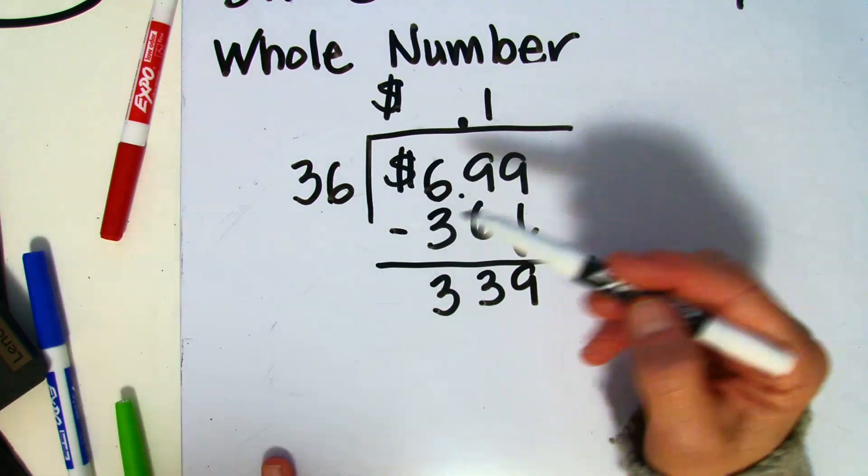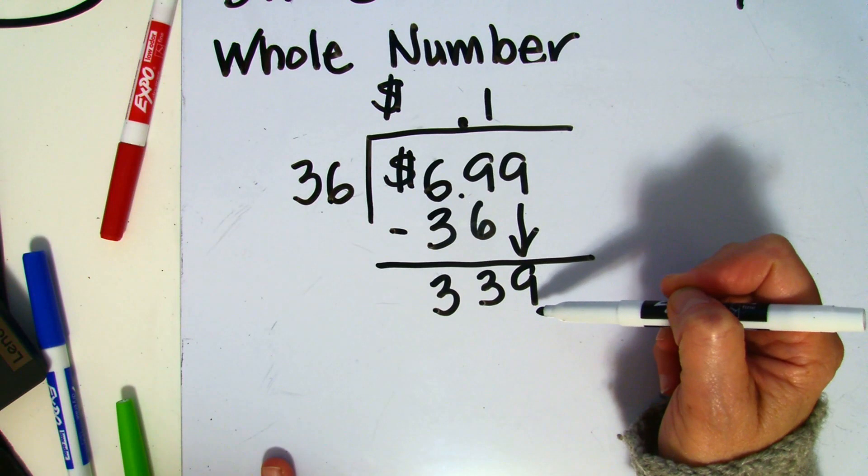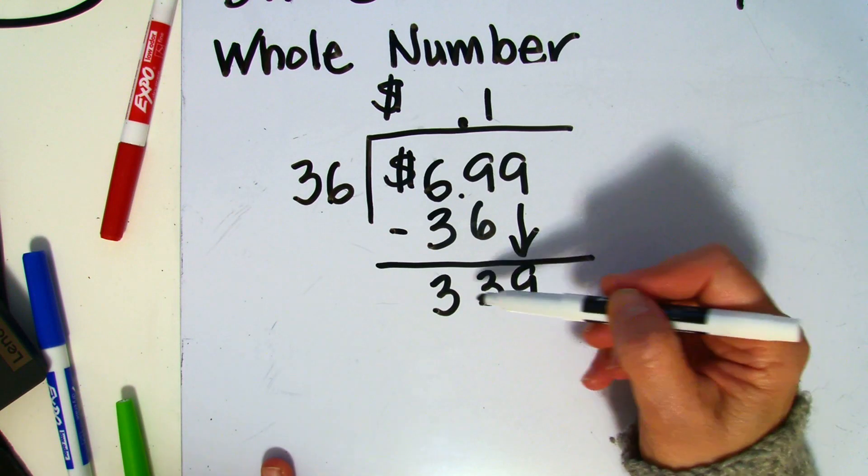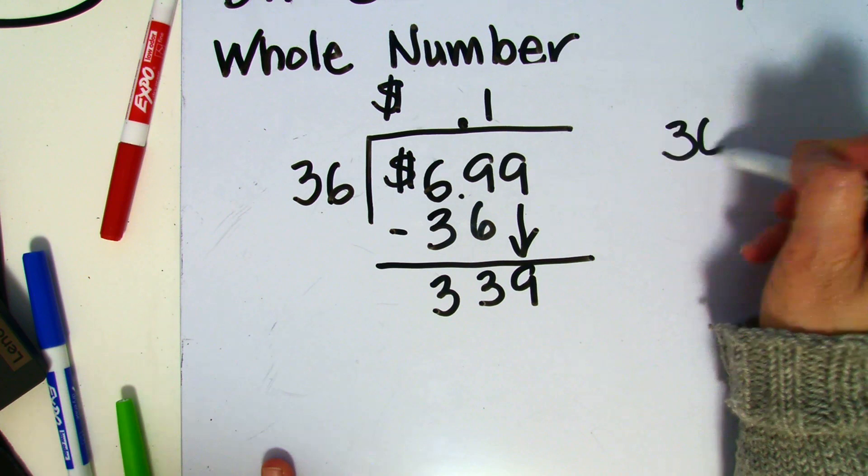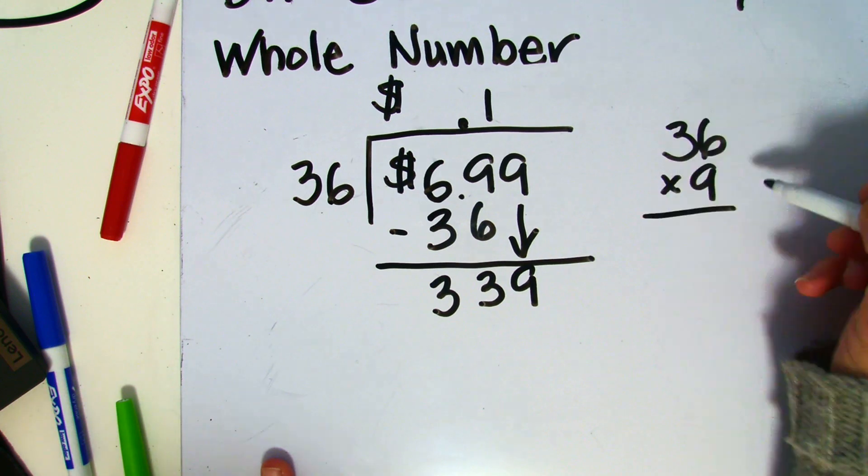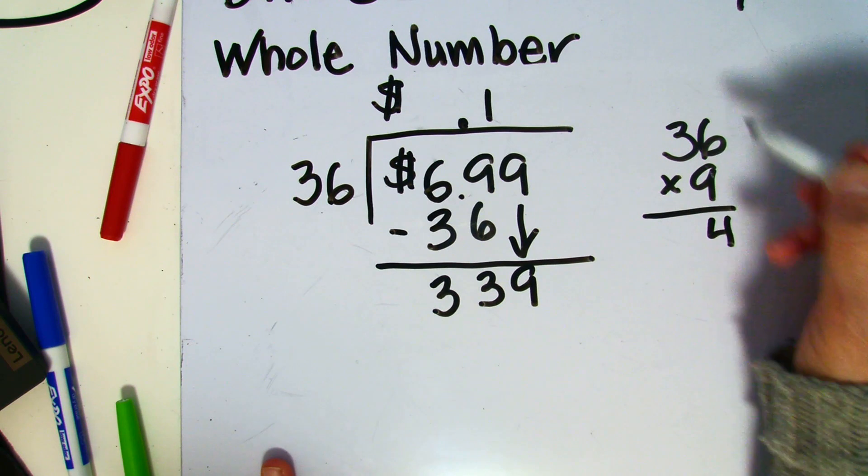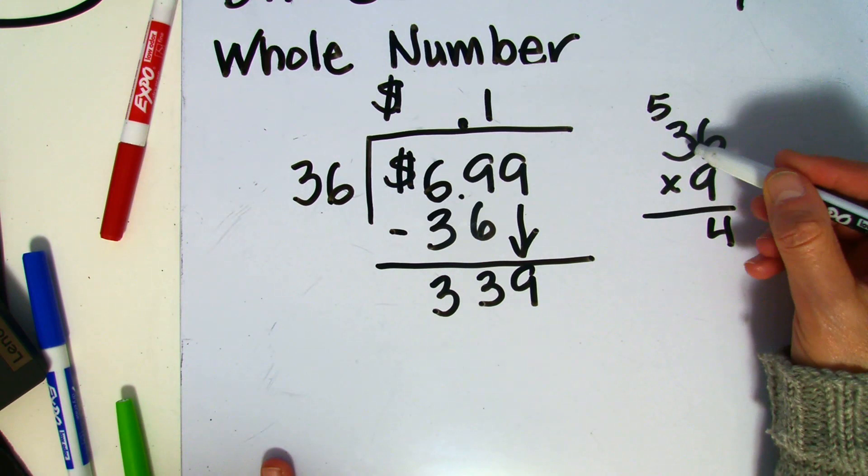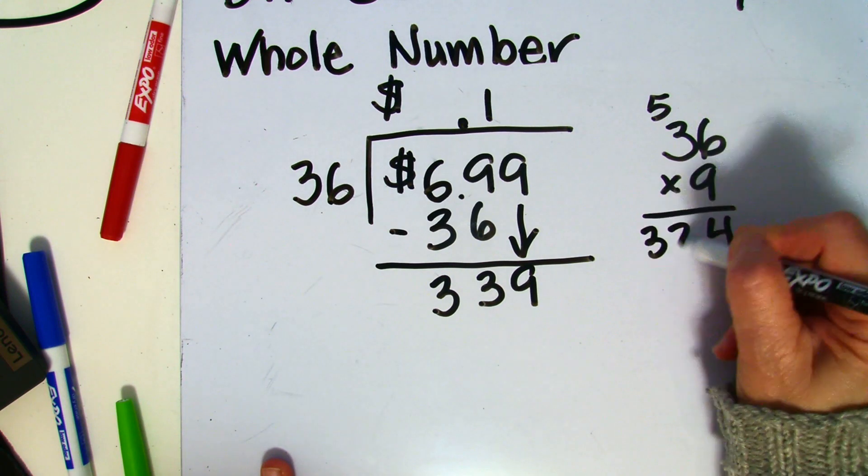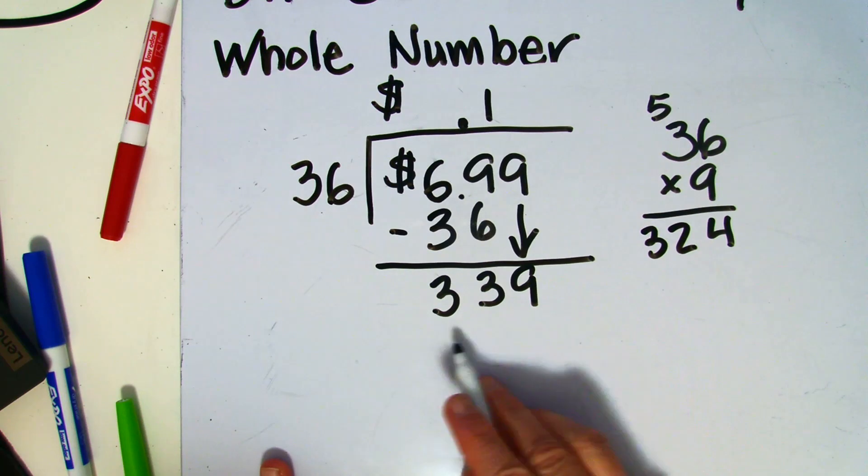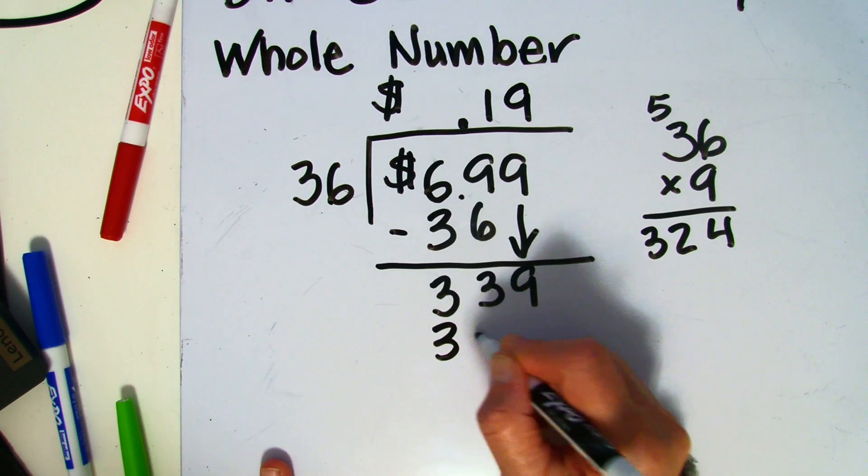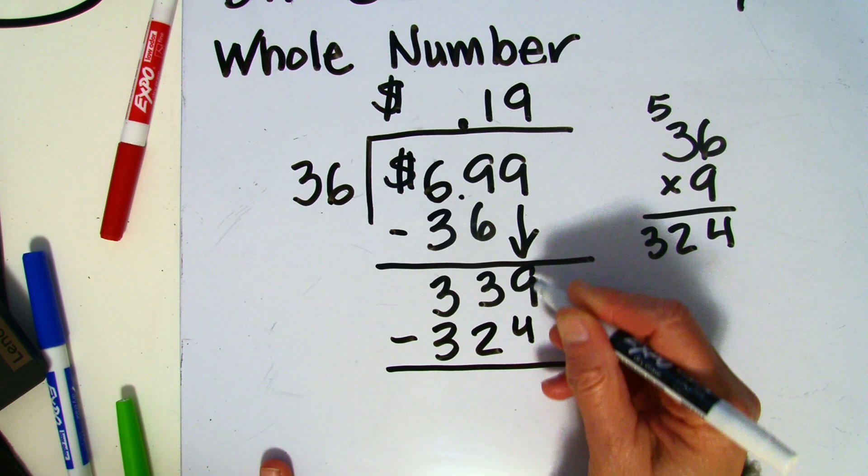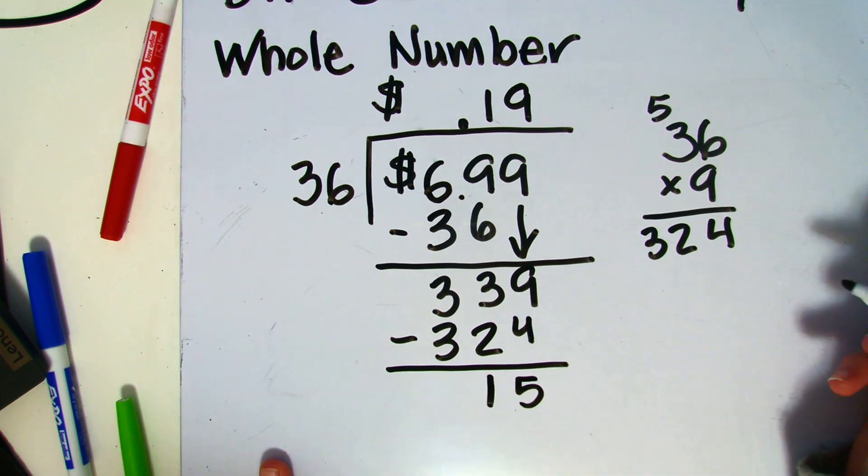Now I'm not sure how many times 36 goes into 339. I think it will be probably 9 times because it's close to 360. That would be 10 times. I'm going to do a little math on the side. 36 times 9, that's going to be 54, carry the 5, that's going to be 27 plus 5 is 32. So 324 is slightly less than 339. I'm going to put a 9 here and subtract 324. Now I will get a difference of 15.